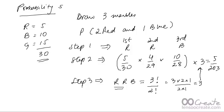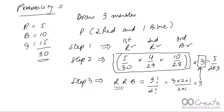The answer is 5 upon 203. To recap: step one, write down one favorable outcome—red, red, blue in that specific order. Step two, find the probability of that exact outcome: 5 out of 30 for the first red, 4 out of 29 for the second red, and 10 out of 28 for the third blue. Then figure out the number of ways of arranging R R B, which is 3 factorial divided by 2 factorial, giving 3. Multiply step two's answer by 3 to get 5 upon 203.